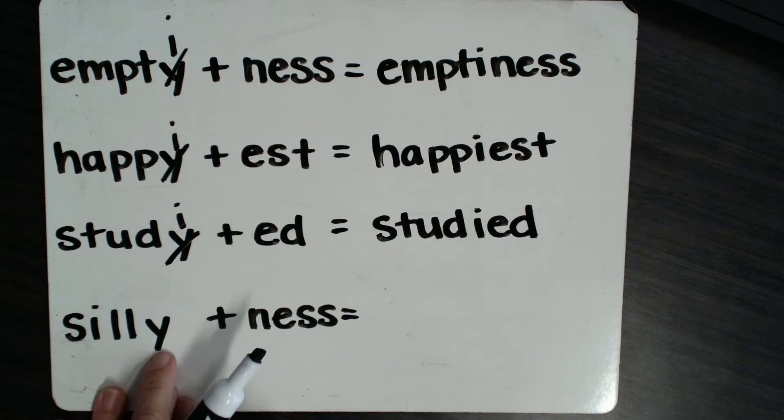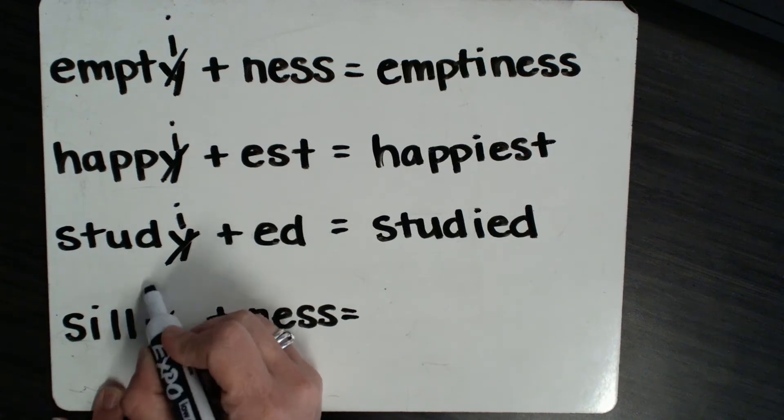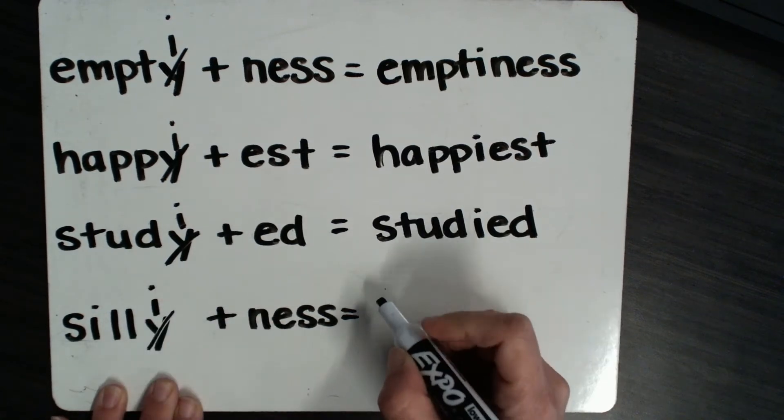Okay, now silly. We have y that comes right after a consonant, and we have a suffix that begins with n. So we change the y to an i,